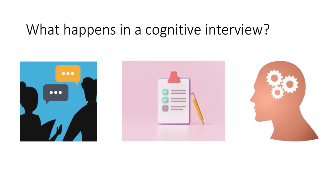During a cognitive interview, we are interested in exploring the following mental processes. Firstly, we want to explore how an individual interprets a survey question and any important terms within it. Secondly, we want to know how an individual retrieves and recalls the information needed to answer the question, including any estimation strategies they may use. Thirdly, we want to know how an individual judges and perceives the question, and their comfort level associated with answering. Finally, we want to know how confident an individual feels in answering a question, including how accurate they think their answers are.